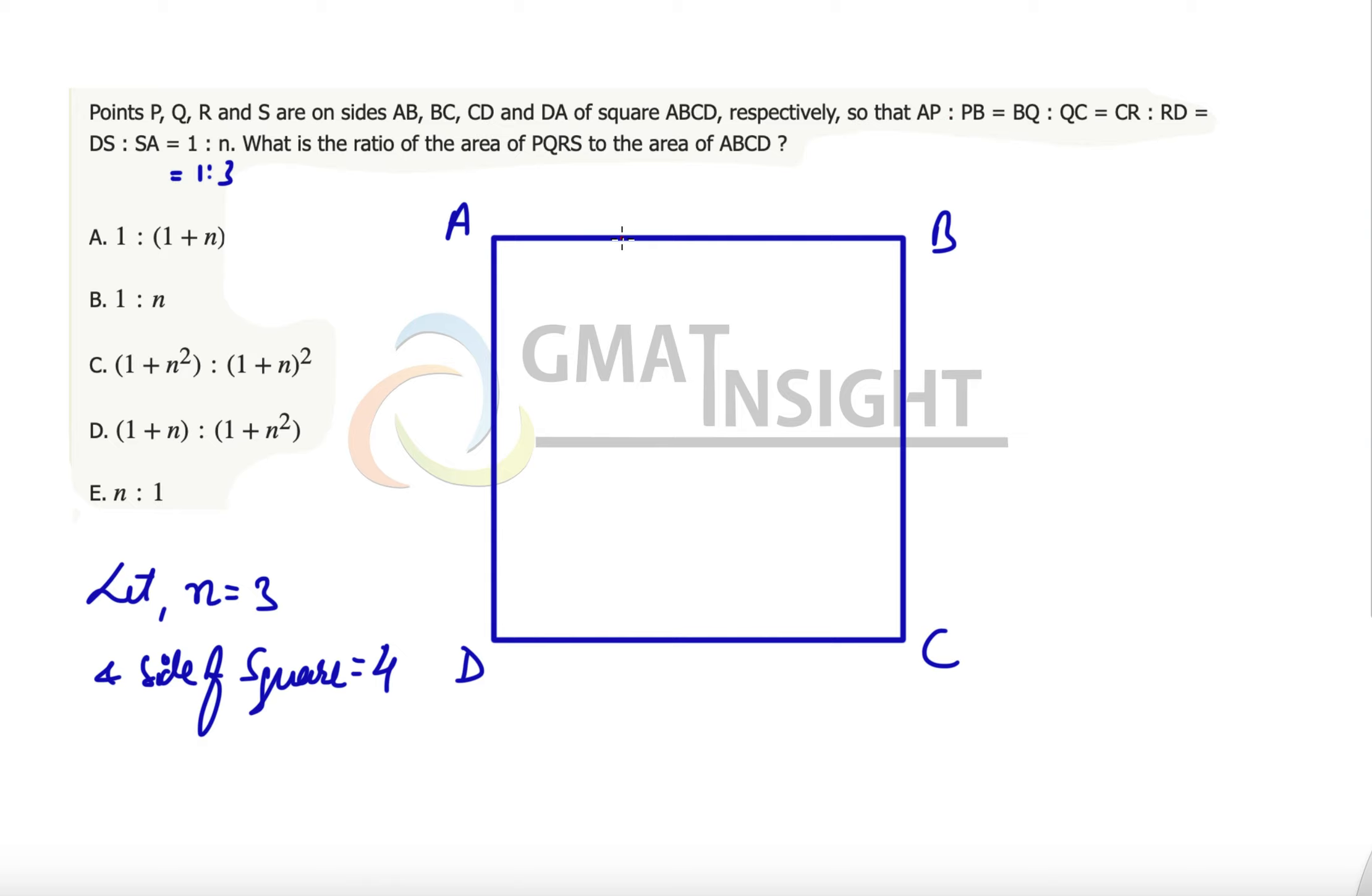So AP over PB—that means P should be somewhere at this place so that this distance is 1 and the remaining distance is 3. So this point is P.